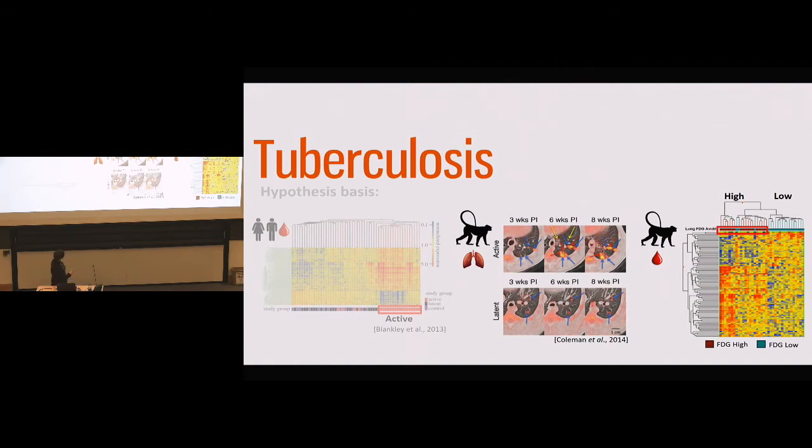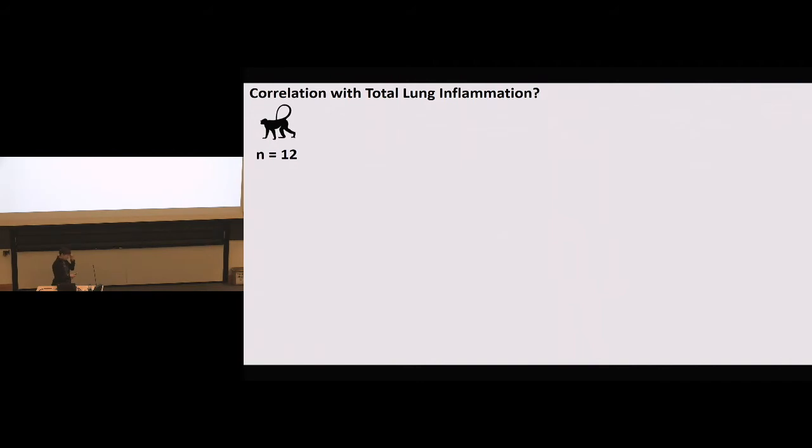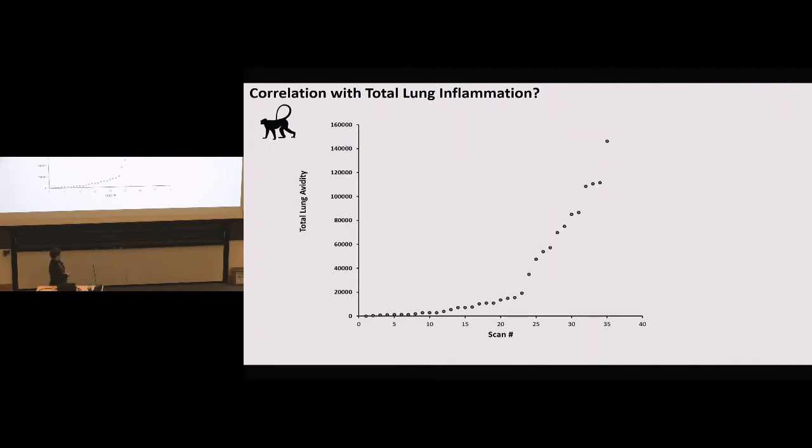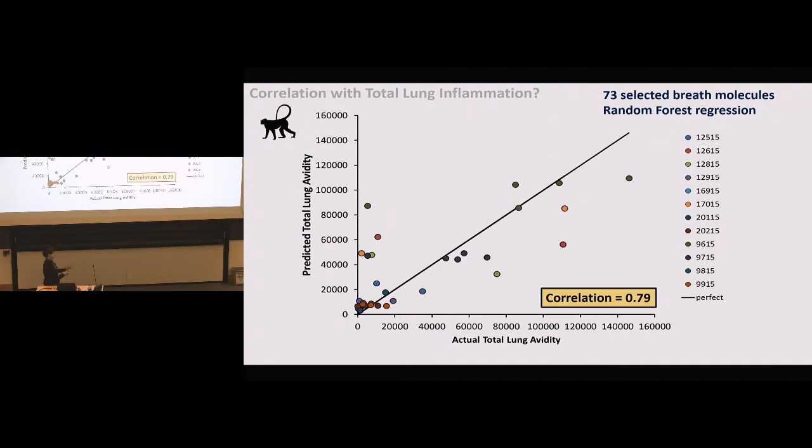So in our monkeys, we have access to PET-CT data. And so this is just a larger version of that. And those of you who do imaging will be quite familiar with this approach. And we were first asked by our collaborators to see if we could correlate breath with the lung avidity score, the inflammatory score. So we looked at 12 animals and we had lung avidity scores for those animals at different time points. This is the lung avidity score. And Ted was tasked with figuring out if we could predict the severity of the disease based on the breath. So if you can predict it, you'll see that everything tracks along a 45 degree line. And these are the animals.